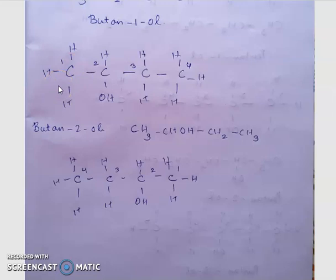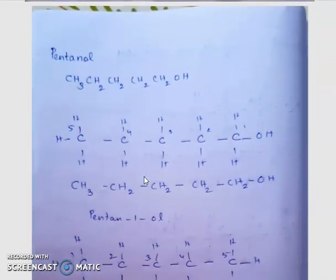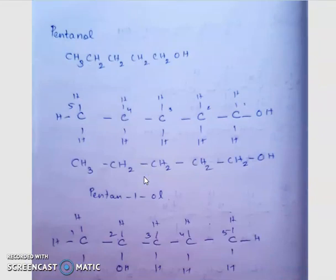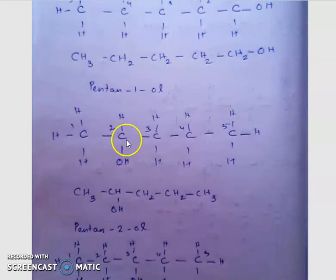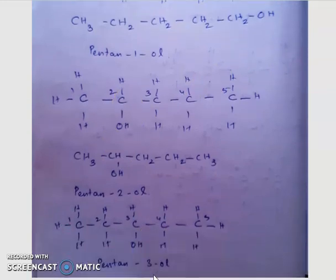While writing the address for a particular branch or functional group, it should get the lowest possible number. Here we have one, two, three—it becomes two, so this is the lowest possible number. Next is pentanol. Pentanol means it will contain five carbon atoms, so it will be having three isomers: pent-1-ol, pent-2-ol, and pent-3-ol. The OH is inserted in the first, second, or third carbon atom respectively.